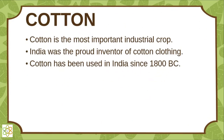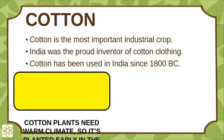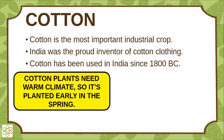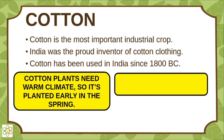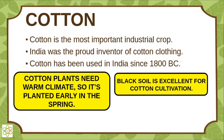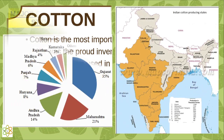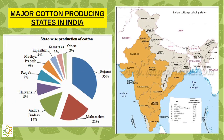Cotton is the most industrial crop. India was the proud inventor of cotton clothing. Cotton has been used in India since 1800 BC. Cotton plants need a warm climate so they are planted early in the spring. Black soil is excellent for cotton cultivation.